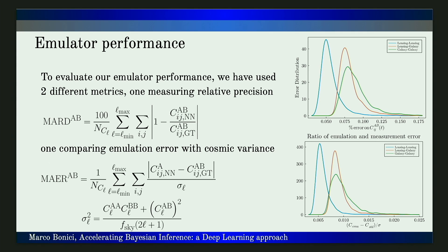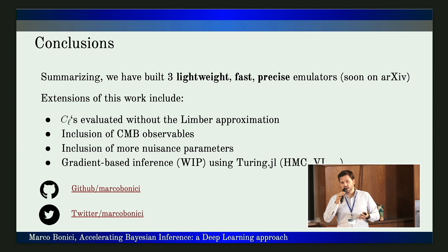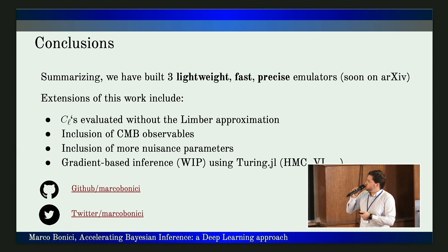Regarding the cosmic variance error, our emulation error is almost always 50 times smaller than the cosmic variance. Summarizing, we have built three emulators which are lightweight, fast, and precise. We are going to soon add this work to the archive.